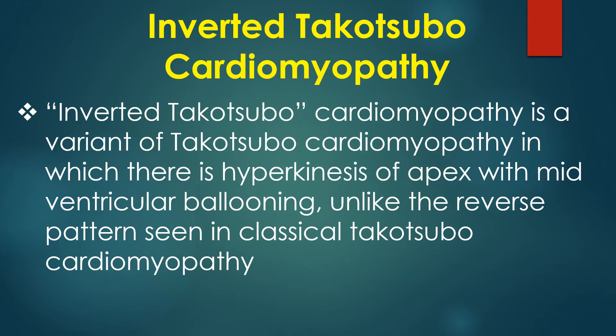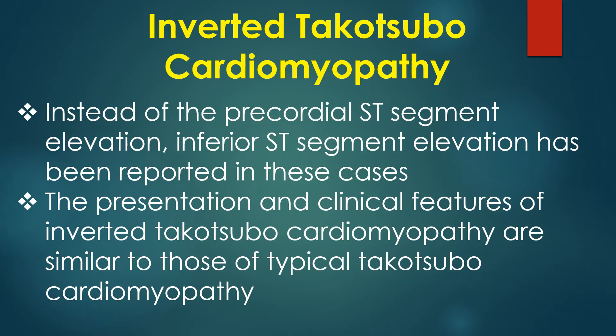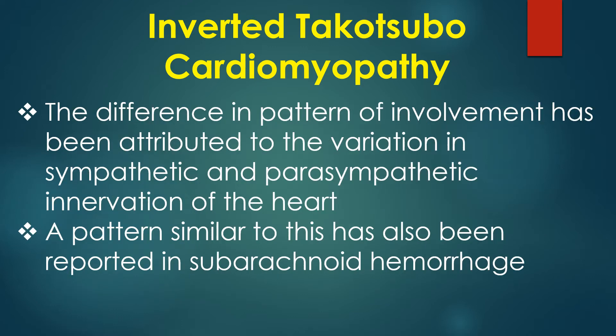Inverted Takotsubo Cardiomyopathy is a variant in which there is hyperkinesis of the apex with midventricular ballooning, unlike the reverse pattern seen in classical Takotsubo Cardiomyopathy. Instead of precordial ST segment elevation, inferior ST segment elevation has been reported in these cases. The presentation and clinical features are similar to typical Takotsubo Cardiomyopathy, and the difference in pattern has been attributed to variation in sympathetic and parasympathetic innervation of the heart. A similar pattern has been reported in subarachnoid hemorrhage.